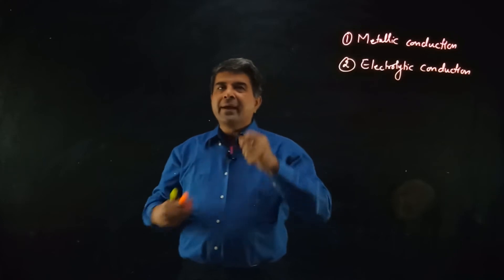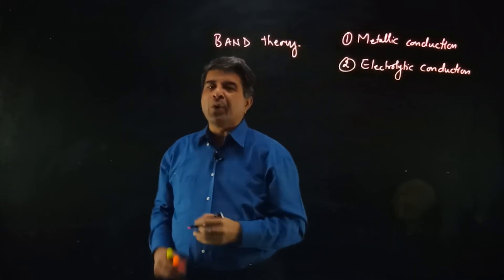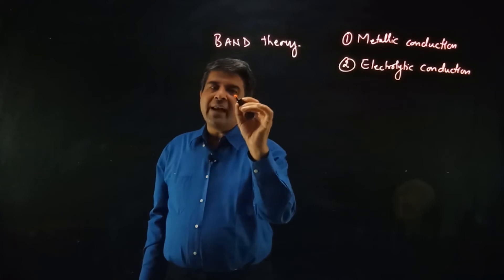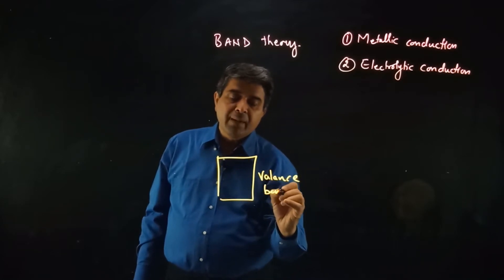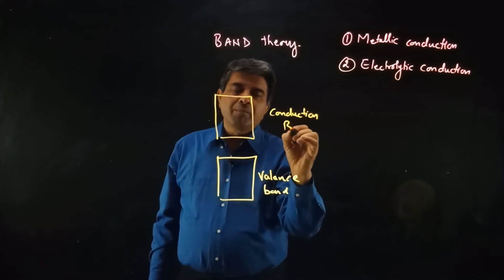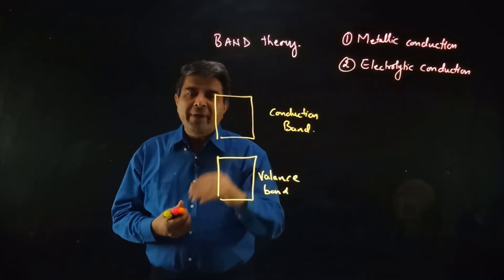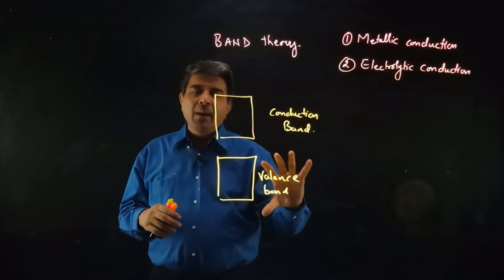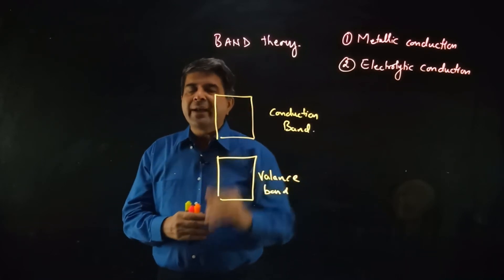This concept is explained by band theory. According to this theory, all metals have two types of bands termed as the valence band and the conduction band. This comes from molecular orbital theory: the orbitals of the metal mix together to form these bands — bonding molecular orbitals form the valence band and anti-bonding molecular orbitals form the conduction band.